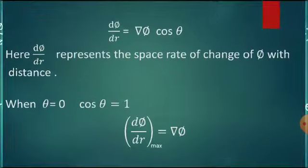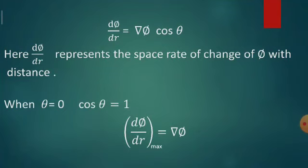From this equation, we can write d phi by dr equals del phi into cos theta. Here d phi by dr represents the space rate of change of phi with distance. If theta equals 0, then cos 0 equals 1. Therefore, d phi by dr will be maximum when theta equals 0, which equals del phi. That means the magnitude of del phi is the maximum space rate of change of phi at a point and it is directed along the normal to the level surface through the point.